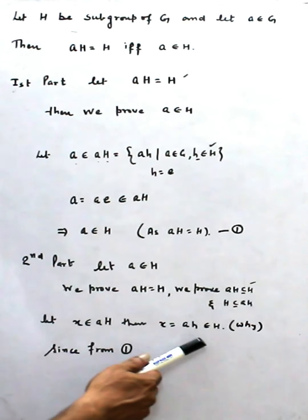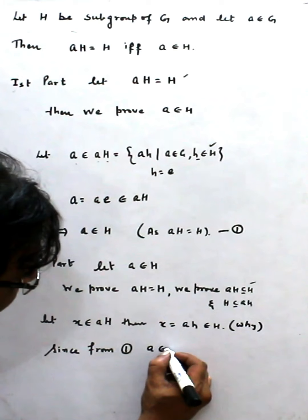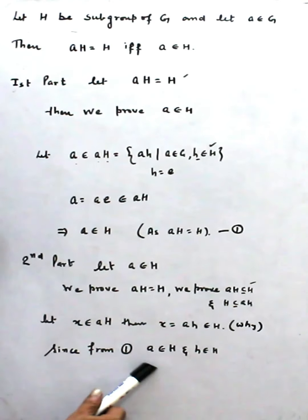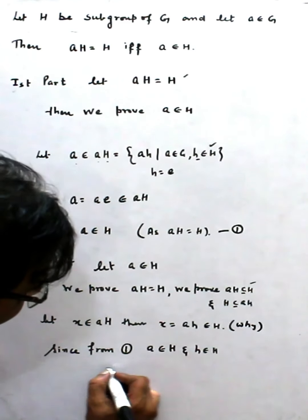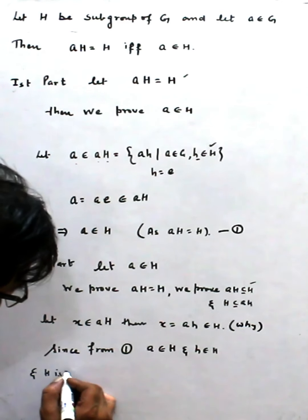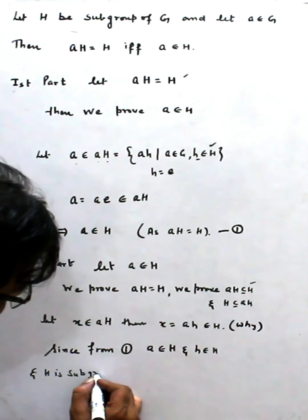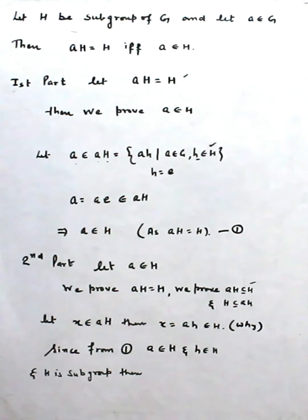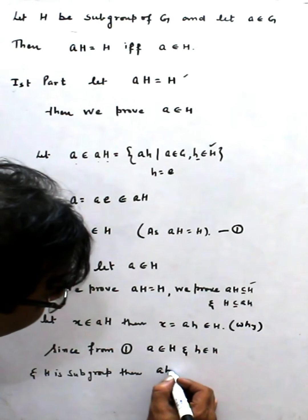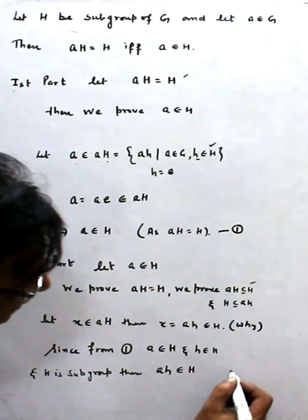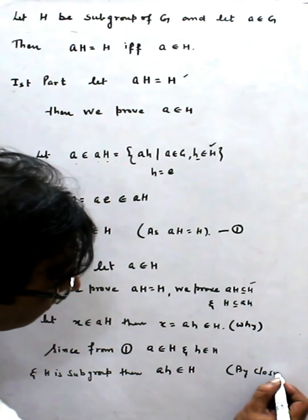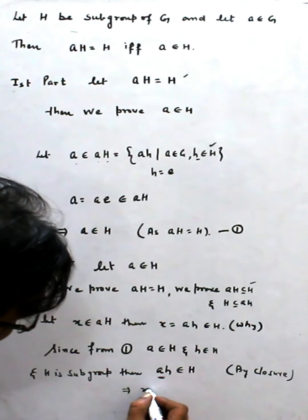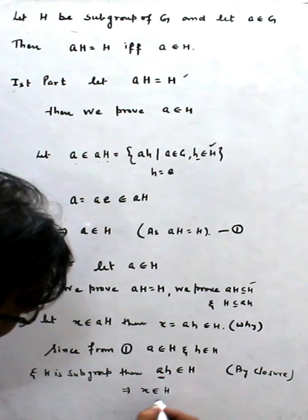From our assumption, A belongs to H and H belongs to H. Since H is a subgroup, it follows the closure property. This means AH belongs to H by closure. And since this element equals X, that means X belongs to H. We started by assuming X is an element of AH and we showed X belongs to H, which means AH is contained in H. We call this result star (*).